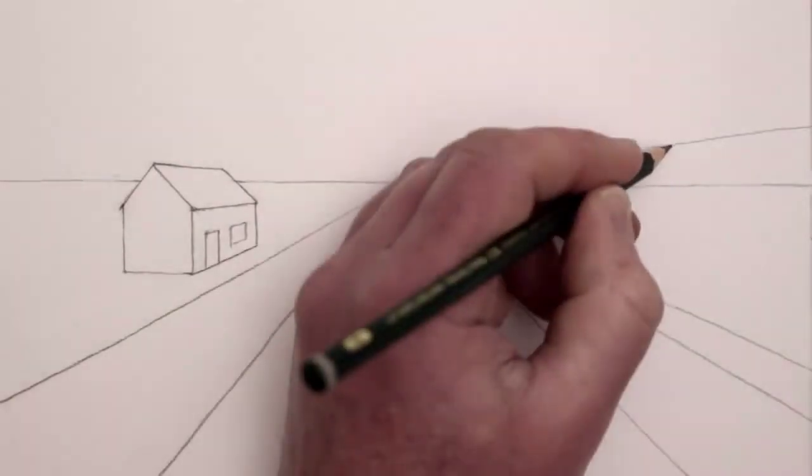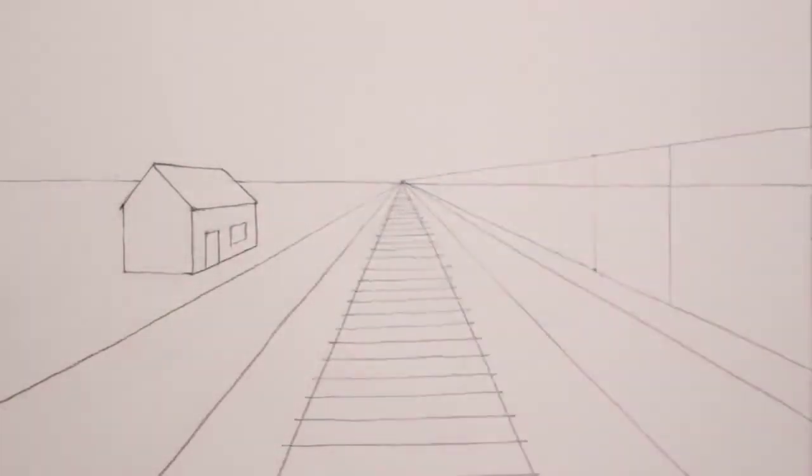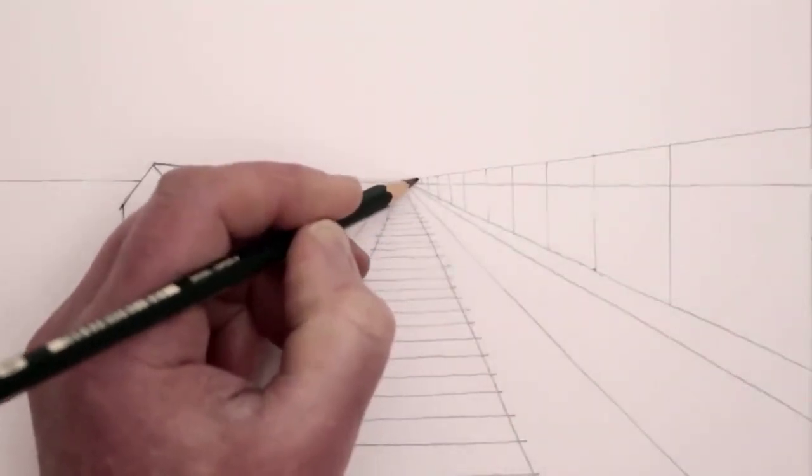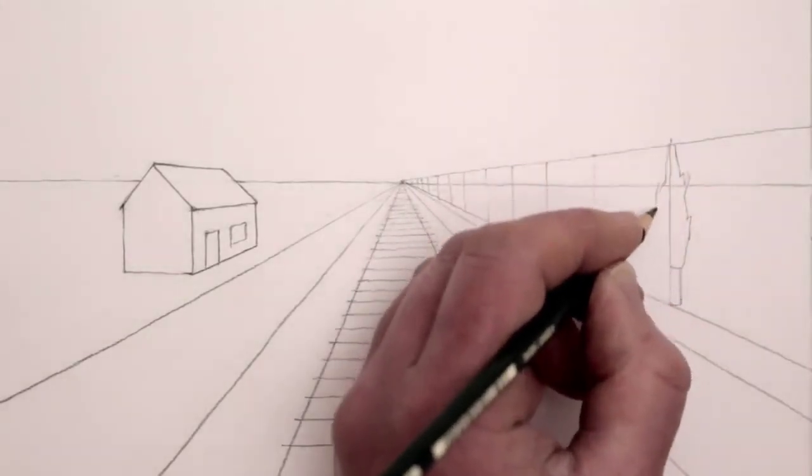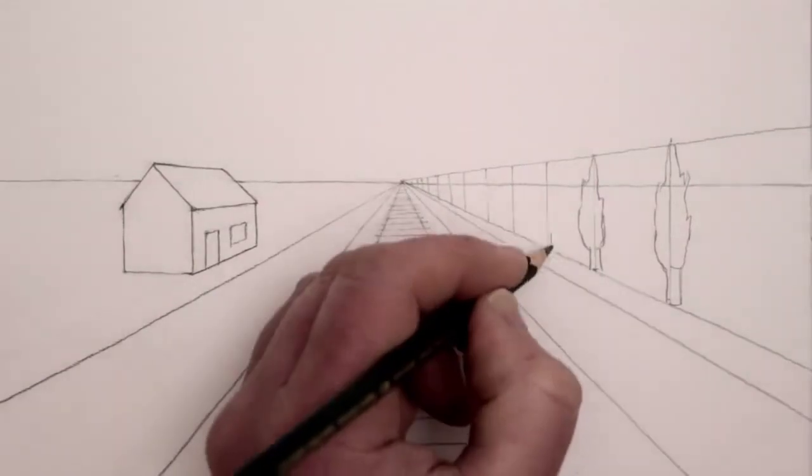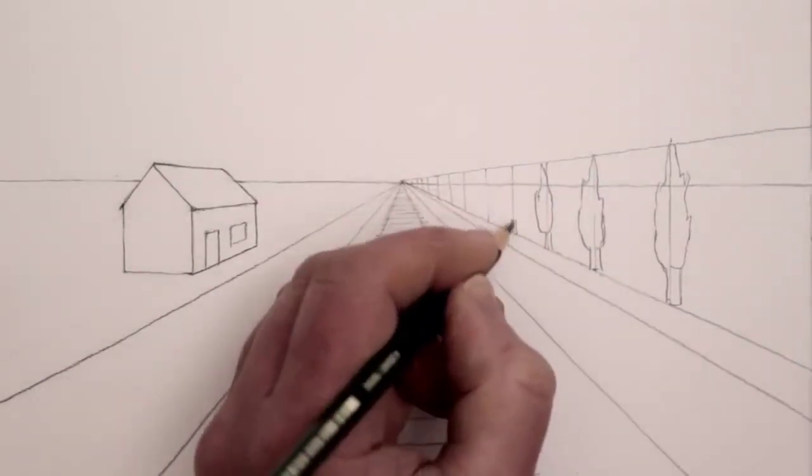Why do objects in the distance look smaller? If you've ever wondered what the cause behind perspective is, or maybe it's never occurred to you, but now that I mention it, that's a very good question. Exactly why do things look smaller in the distance? Well, stay tuned because I'm about to science that.